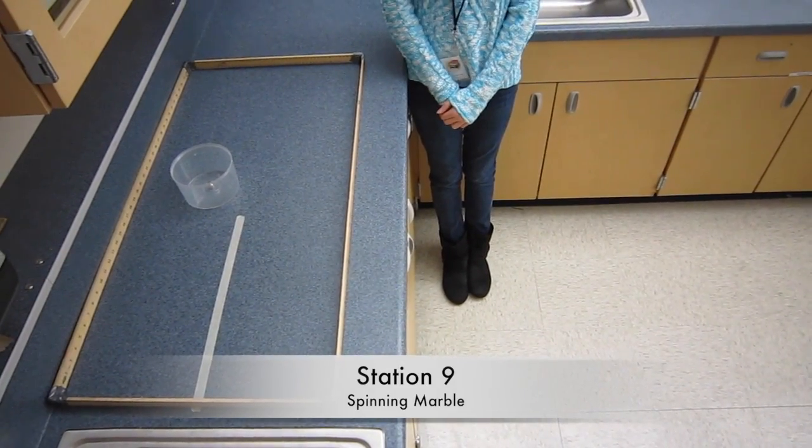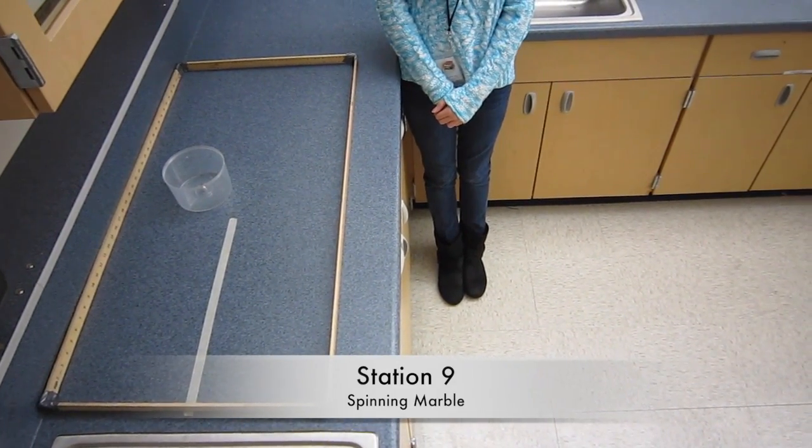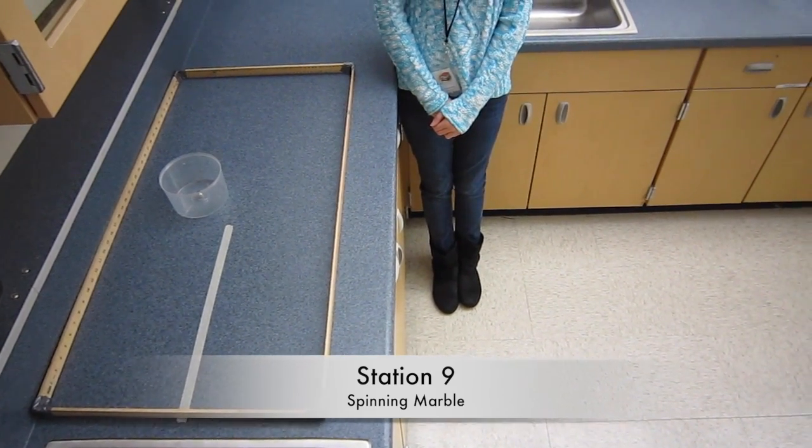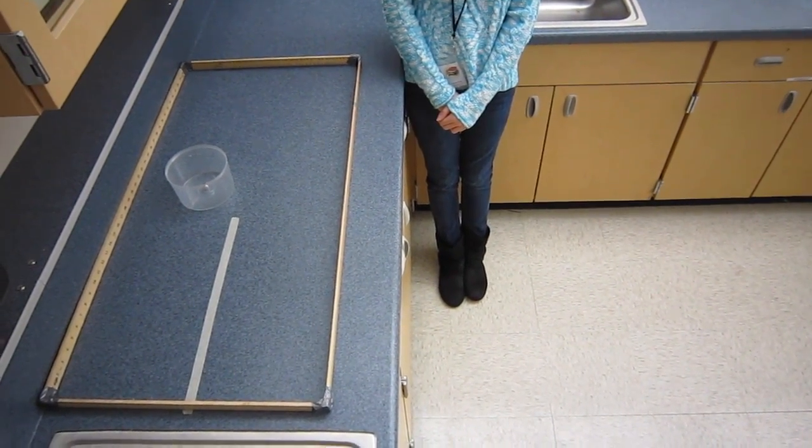Station 9, spinning marble. Place the steel ball on the counter underneath the clear plastic lid. Slowly spin the marble in a circle so that the ball traces the outer edges of the container.